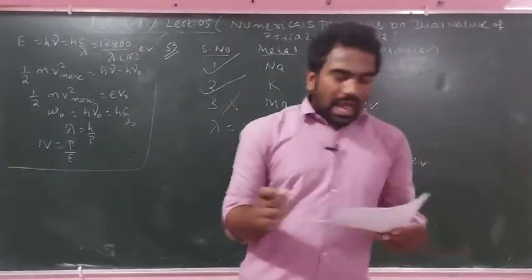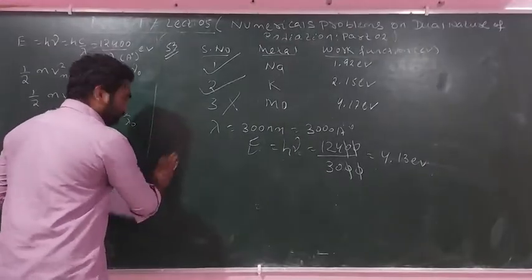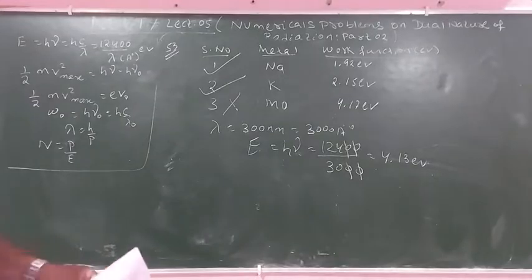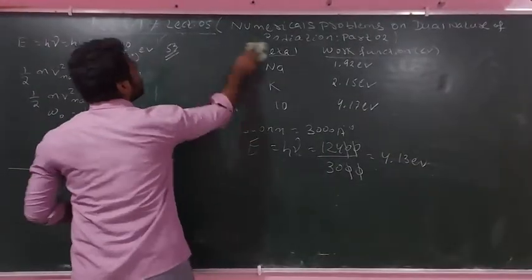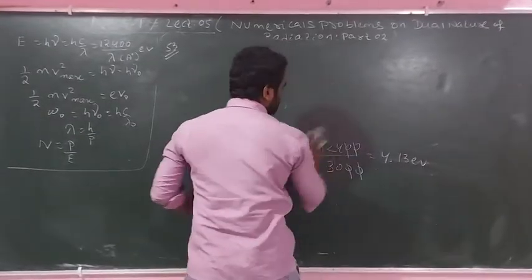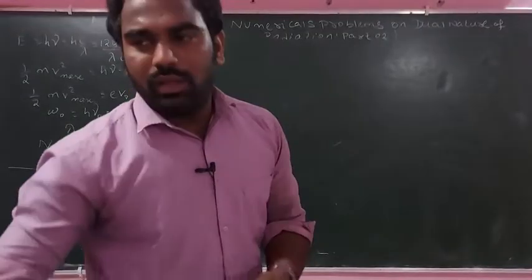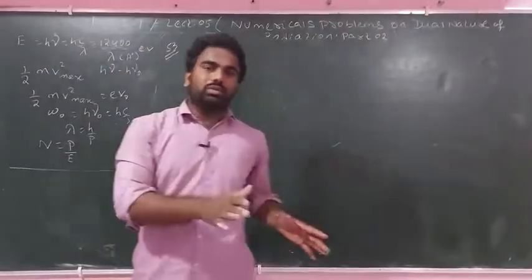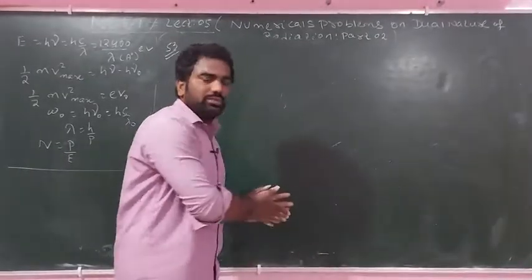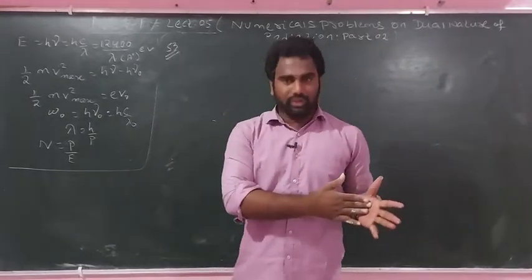Question number 54 is the last question — light of wavelength 5000 angstrom. That's the last question I will do in this lecture. If you like the video, please like and subscribe. I will try to answer your questions. Thank you.